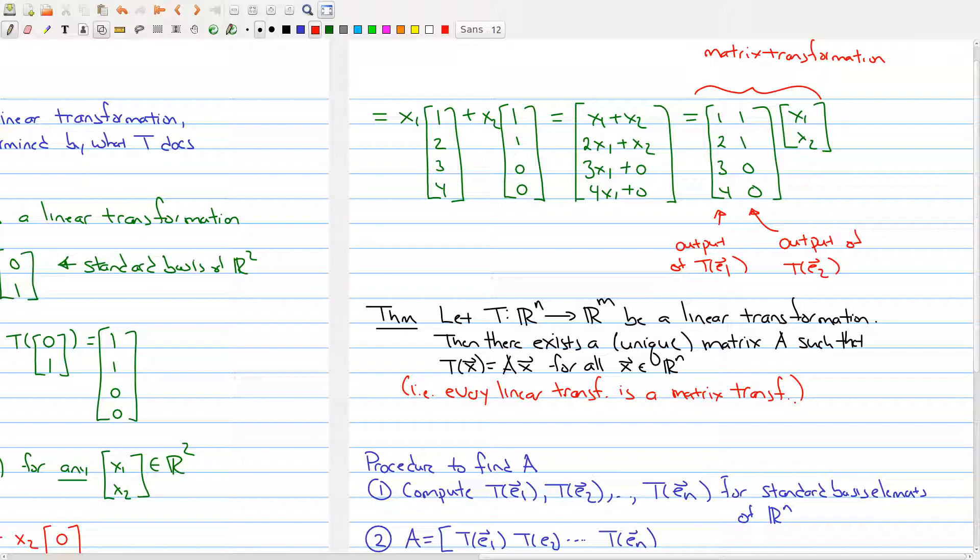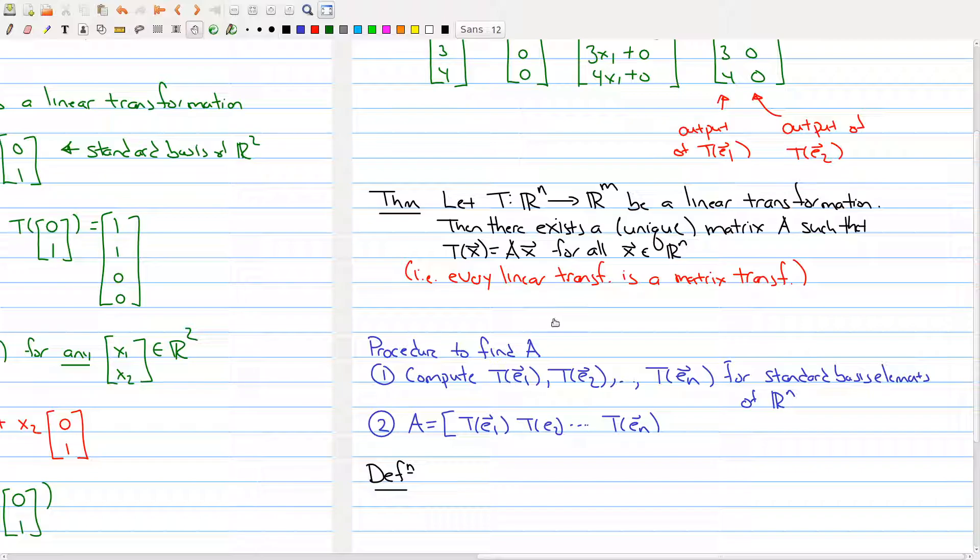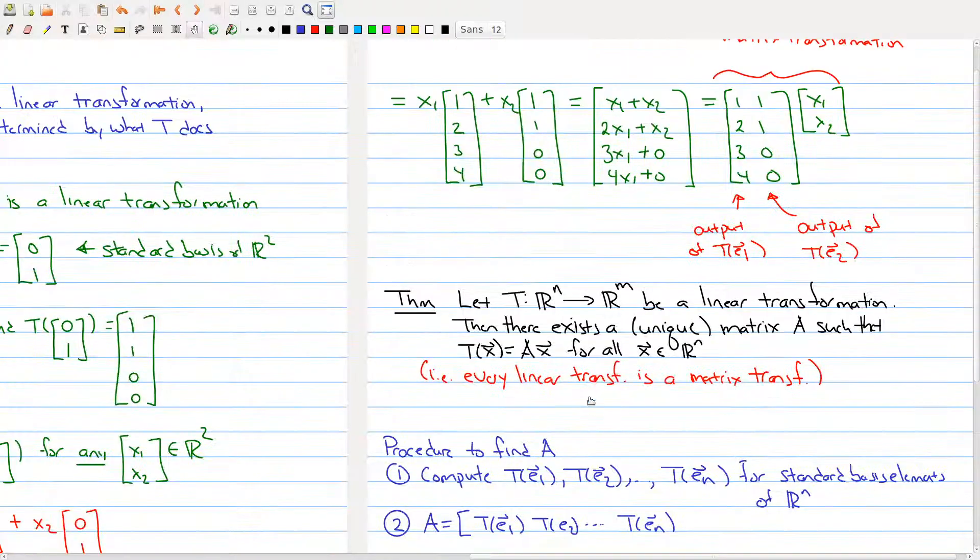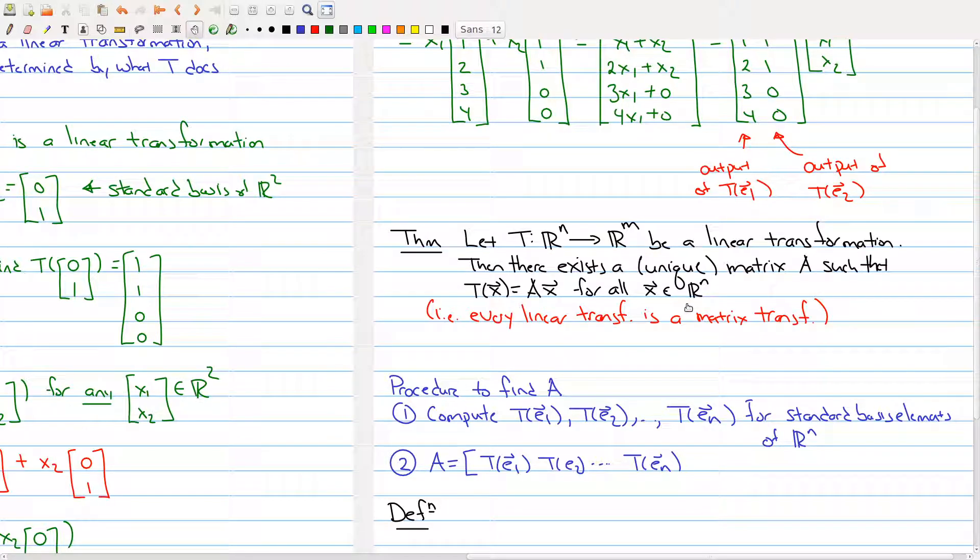Now the proof of the theorem basically follows kind of exactly what we did in the example, but it's done a little bit more abstractly. But one of the things that we can use from this example is we actually can find this matrix A, we can see how this is done. The matrix A that we needed, well, its first column was given by the output of where the first standard basis vector is. And this second column is given by the output of where the second standard basis element is.